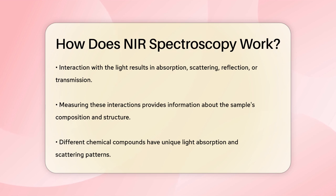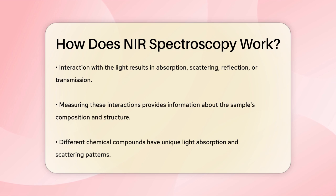When the near-infrared light hits the sample, some of it gets absorbed, some gets scattered, and some gets reflected or transmitted. By measuring how the light is absorbed, scattered, reflected, or transmitted, scientists can get a lot of information about the sample, including details about the molecular composition and structure.